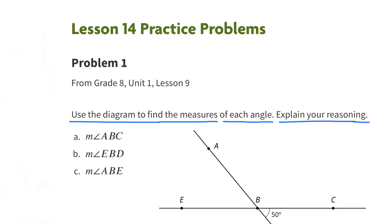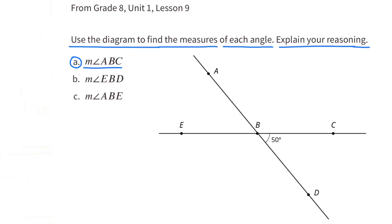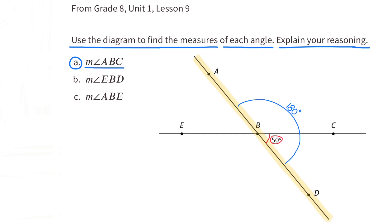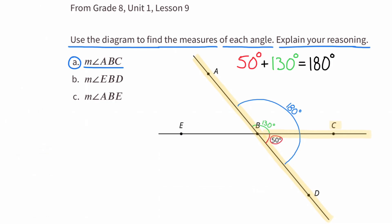Number one. Use the diagram to find the measures of each angle. Explain your reasoning. A: the measure of angle ABC. I highlighted angle ABC in yellow, and they tell us that angle CBD is 50 degrees. Angle ABC plus 50 degrees will equal 180 degrees, so 180 degrees minus 50 degrees equals the measure for angle ABC. Since 180 minus 50 is 130, angle ABC is 130 degrees.